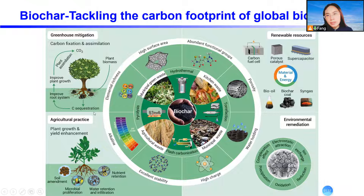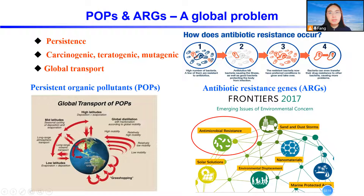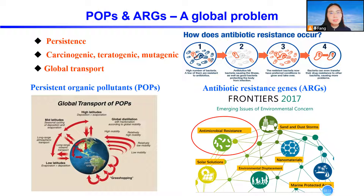In addition to carbon fixation and sequestration, biochar is also used for enhanced plant growth. For my research, I mainly focus on environmental remediation using biochar — specifically on persistent organic pollutants, known as POPs, and also emerging contaminants like antibiotic resistance genes, known as ARGs. Both POPs and ARGs are an important global problem mainly related to human health.